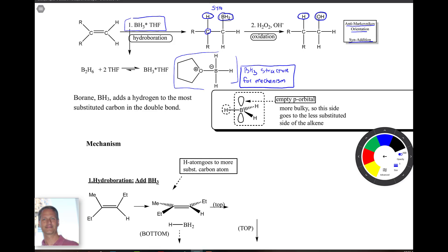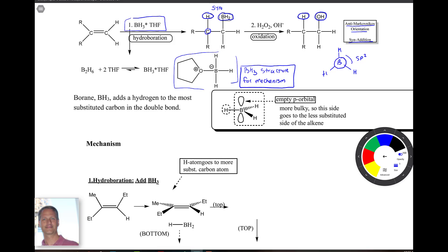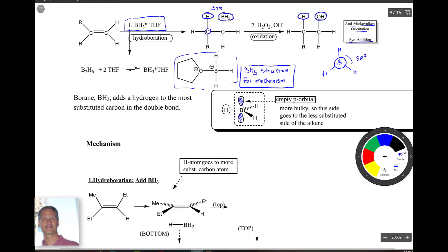A note about BH3: boron has empty p orbitals, as we saw back in chapters 1–3 when looking at boron's structure. BH3 is sp2 hybridized — it has three sp2 bonds and an unhybridized p orbital. When we turn it on its side, we see that p orbital. It's those p orbitals that are going to react by sitting on the carbon-carbon double bond's pi bond orbitals.